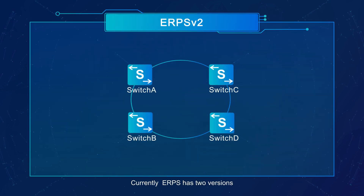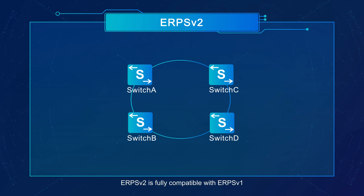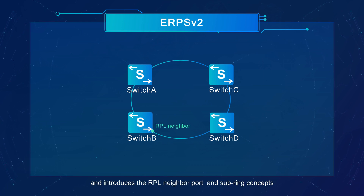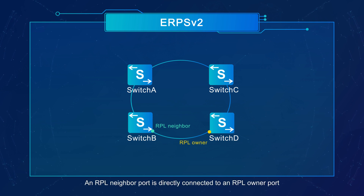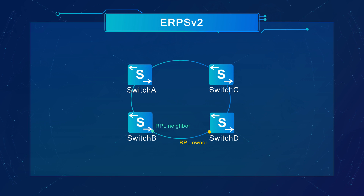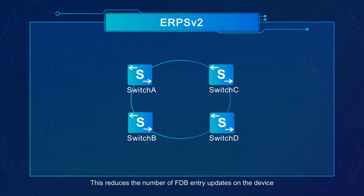Currently, ERPS has two versions: ERPS V1 and ERPS V2. ERPS V2 is fully compatible with ERPS V1 and introduces the RPL neighbor port and sub-ring concepts. An RPL neighbor port is directly connected to an RPL owner port and is blocked or unblocked together with the RPL owner port, which reduces the number of FDB entry updates on the device where the RPL neighbor port resides.